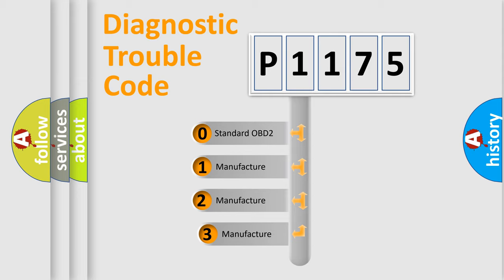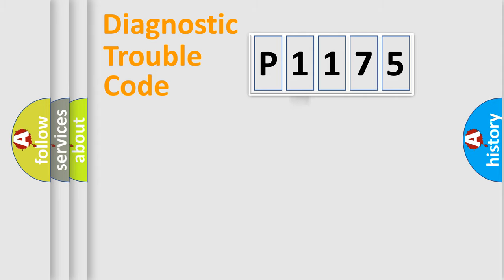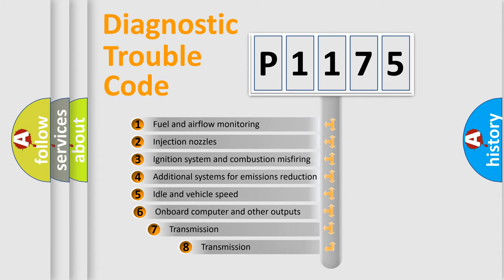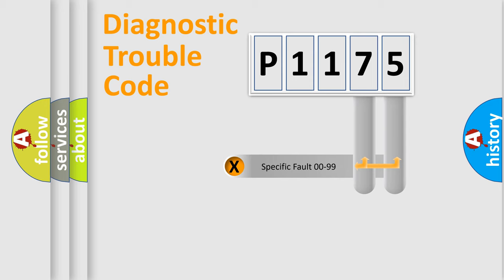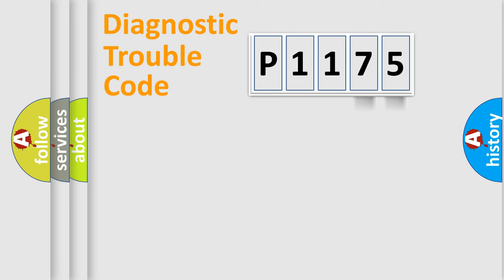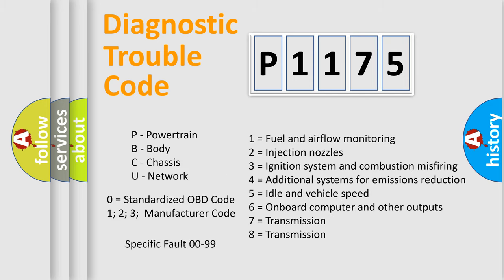If the second character is expressed as zero, it is a standardized error. In the case of numbers 1, 2, or 3, it is a more specific expression of a car-specific error. The third character specifies a subset of errors. This distribution is valid only for the standardized DTC code, and only the last two characters define the specific fault of the group. Such a division is valid only if the second character code is expressed by the number zero.